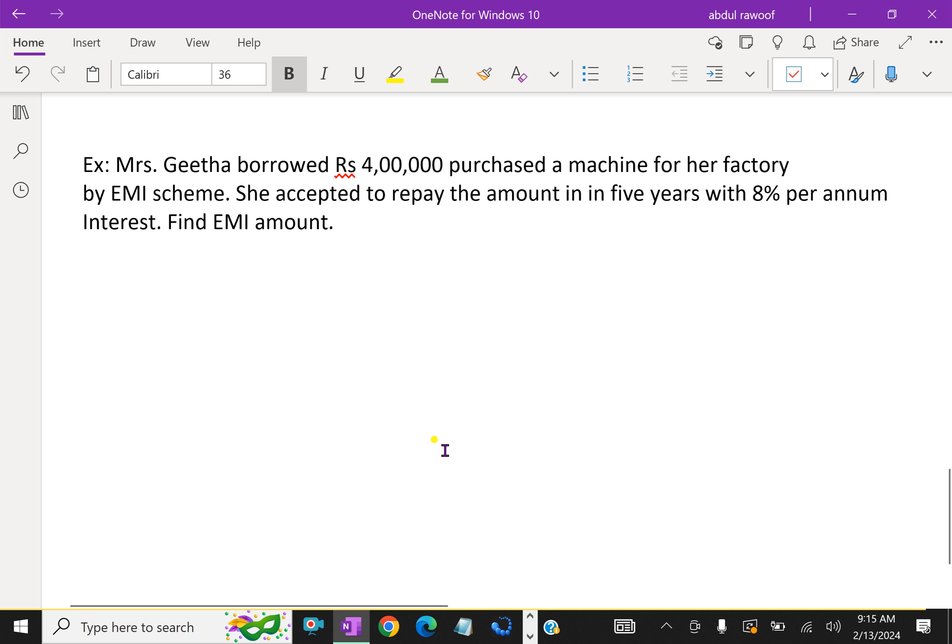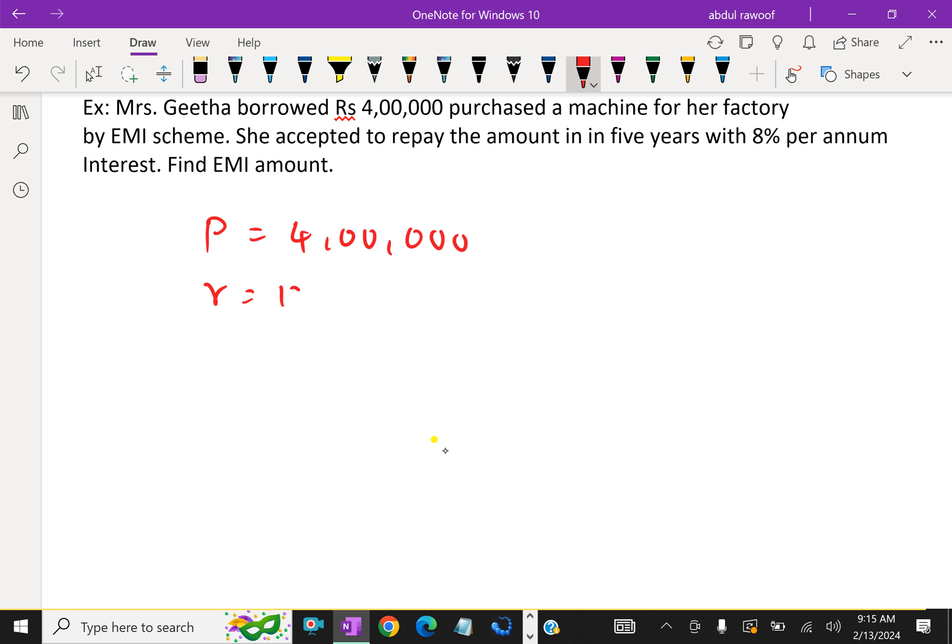Look at here. Here first we will write the given things. The principal she borrowed is 4 lakhs, 4 lakhs rupees. Rate of interest is 12% per annum.